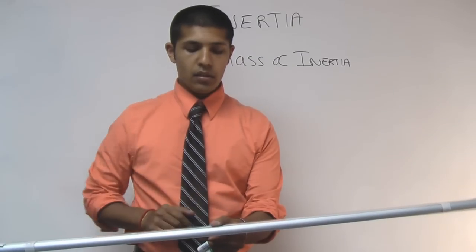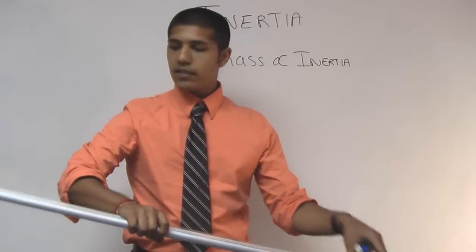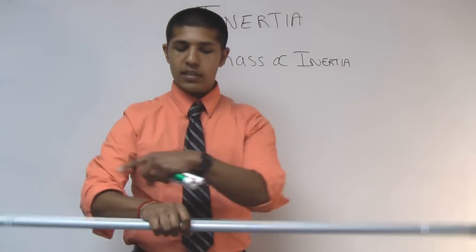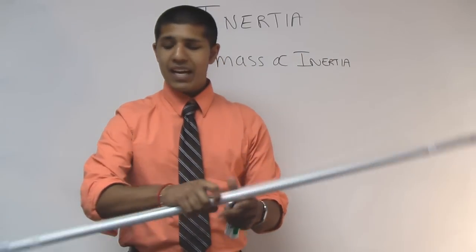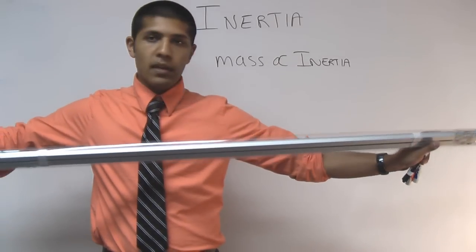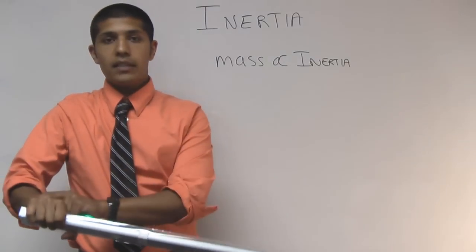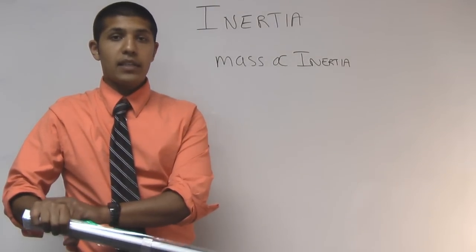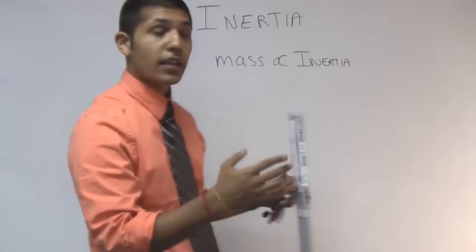So again, at the middle, it was easy because the masses are distributed at an equal distance away from the center of my circle. However, at this point, all of this mass is distributed very far from the center of my circle. That makes the inertia high. So let's take a look at an equation form.